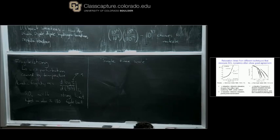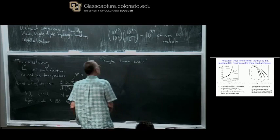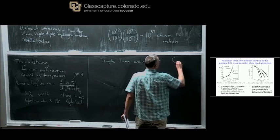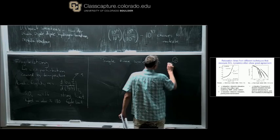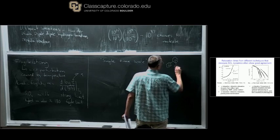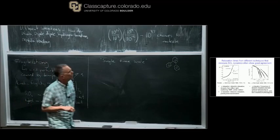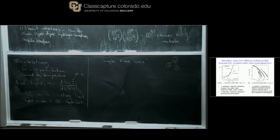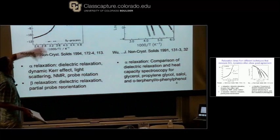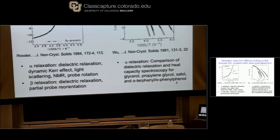Let me talk about the plot on the left. This is data for ortho-terphenyl, one of my favorite molecules and one of the best studied supercooled liquids. This is a plot which combines data from many, many different techniques for the same material. We're going to focus on what's called the alpha process — the slow relaxation process, the structural relaxation process. We'll come back tomorrow to talk about the beta relaxation process. Ortho-terphenyl is quite a fragile system — quite super-Arrhenius.